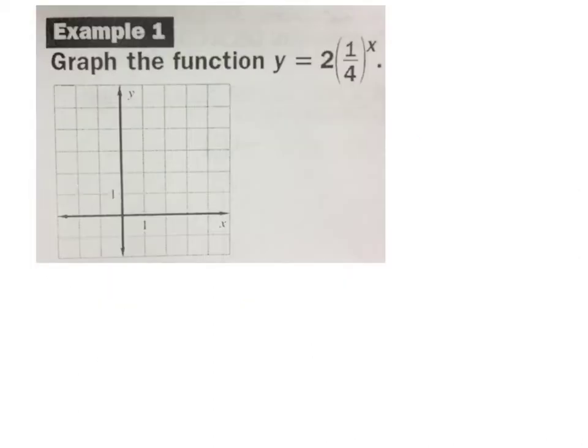So let's look at this first example of y equals 2 times 1 4th to the x. So, this time, just noticing the transformations. Will this graph move right or left? It won't move right or left, because this x has nothing attached to it up here. Will it move up or down? No, it won't move up or down. Since it doesn't move up or down, the horizontal asymptote doesn't move. Where's my horizontal asymptote? Y equals 0. So y equals 0 is my horizontal asymptote.